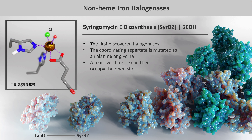Here I'm showing the active site of a typical halogenase. You can see that a chlorine atom now occupies the binding site where the aspartate was. This allows for chlorination instead of hydroxylation of the activated carbon atom. I also wanted to note that in this slide I'm showing the coordinating residues of the halogenase SyrB2, which was the first non-heme iron halogenase discovered. There are many other examples of non-heme iron enzymes, and in later slides I will cover a few of them such as BesD and WelO5, which are also halogenases like SyrB2.